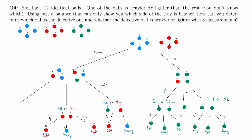In the last scenario — where the right side is heavier in the second weighing, meaning one red and two blue is heavier than two red, one blue, and one green — we know that either blue one or blue two is heavy, or red two is light. We can do the same trick: take blue one and blue two and weigh them against each other. If they're equal, we know that red two is light. If blue two is heavier, then blue two is heavy. If blue one is heavier, then blue one is heavy.